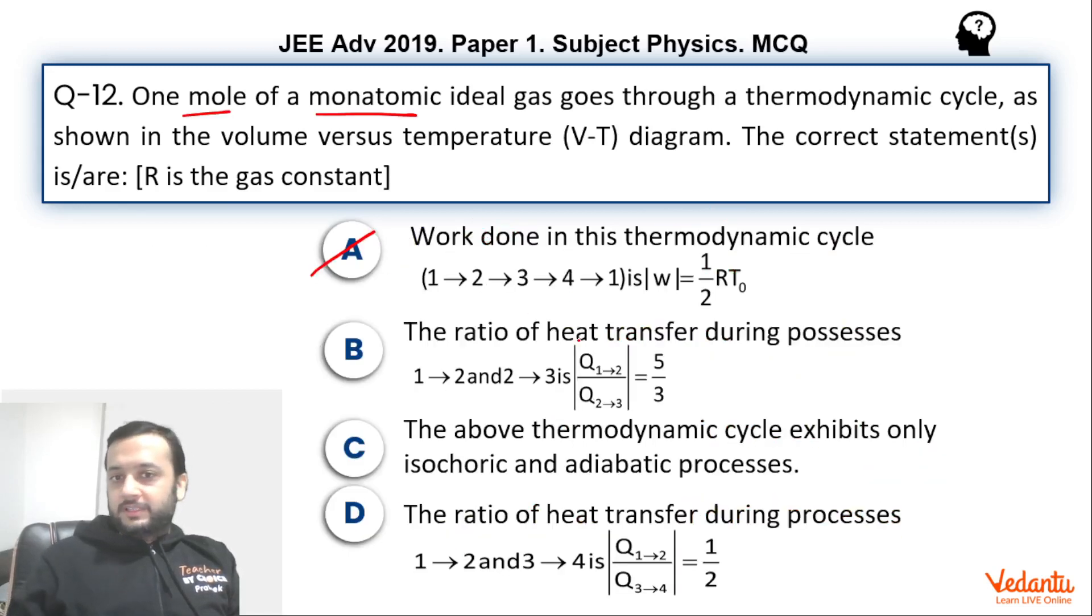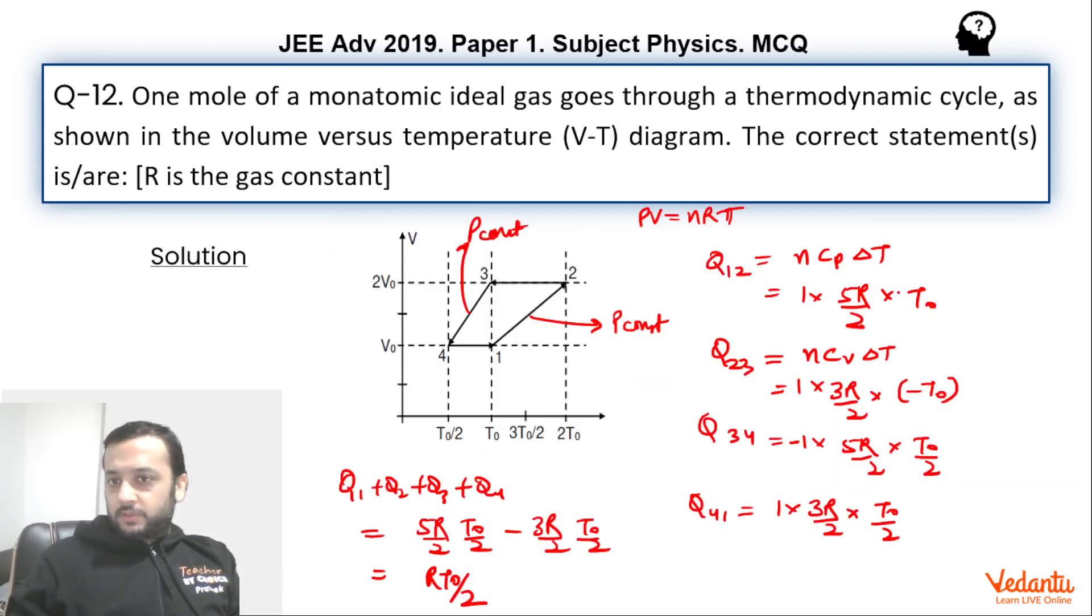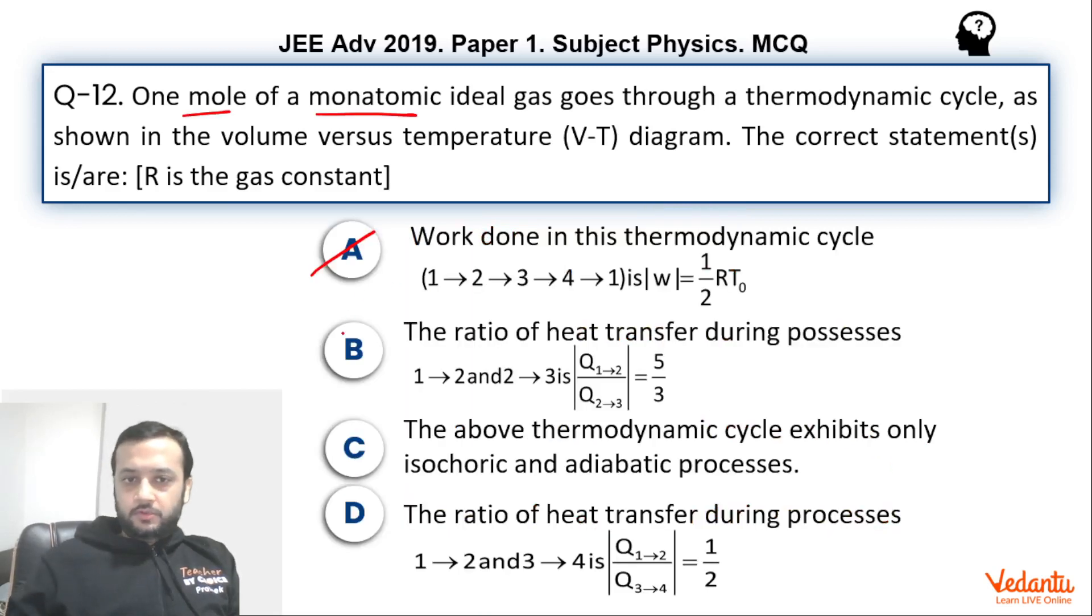If we talk about option B, the ratio of heat transfers during 1-2 and 2-3. So 1-2 is this and 2-3 is this. If you take the ratio—magnitudes we have to talk about, so minus sign will be ignored. T0, T0 will get cancelled. 5R by 2, 3R by 2 will also get cancelled. 5 to 3 is correct. This is the correct option.